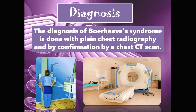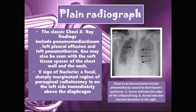The diagnosis of Boerhaave syndrome is done with plain chest radiography and is confirmed by a chest CT scan. Classic chest X-ray findings include pneumomediastinum, left pleural effusion, and left pneumothorax. Gas may also be seen within the soft tissue spaces of the chest wall and the neck. The V-sign of Naclerio, a focal sharply marginated region of paraspinal radiolucency on the left side immediately above the diaphragm, may also be seen. A chest X-ray demonstrating tension pneumothorax caused by Boerhaave syndrome is shown, where arrows labeled A indicate the edge of the collapsed lung and arrow B indicates tracheal deviation to the right.